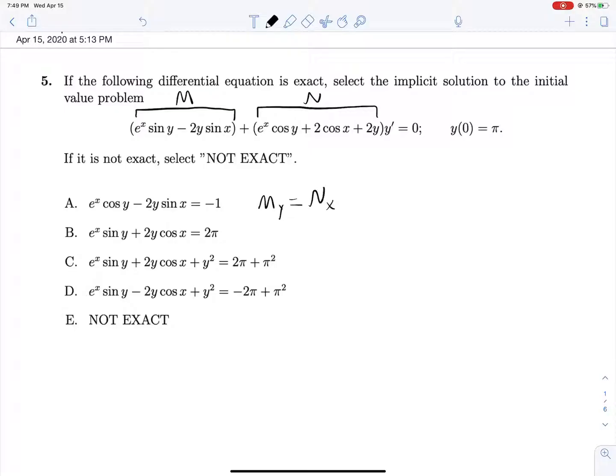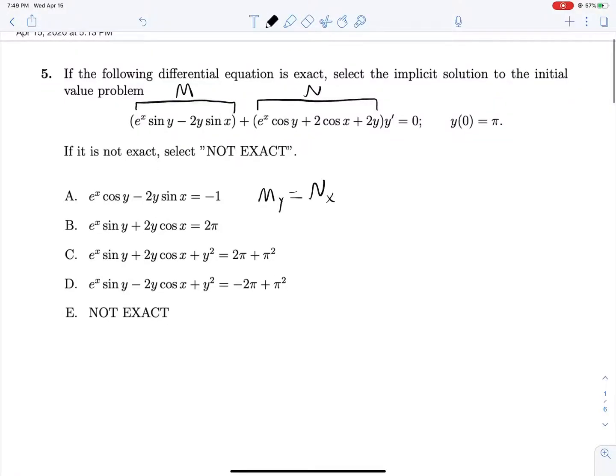So we're going to use that. Now the partial derivative of M with respect to y will be e^x cos y minus 2 sin y, and we're checking if that's equal to N_x. So the partial derivative of N with respect to x, that's e^x cos y minus 2 sin x. And then this 2y will become zero because we're treating it as a constant. So because this is true, our equation is exact.